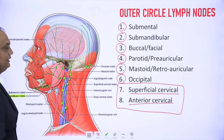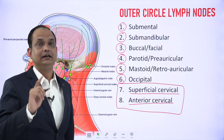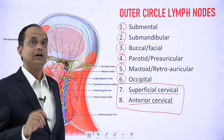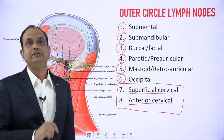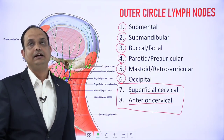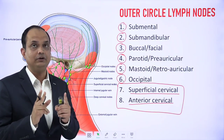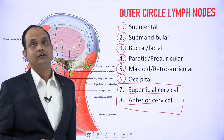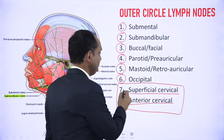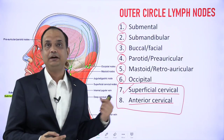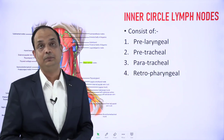An important point: any lymph node present along the internal jugular vein is always deep, but a lymph node present along the external jugular vein comes under the superficial group — specifically the superficial cervical group. The inner circle lymph nodes are present around the upper end of the respiratory and alimentary system.